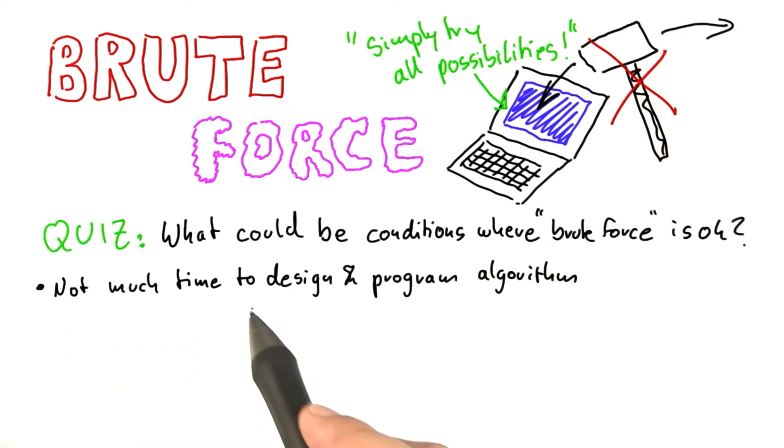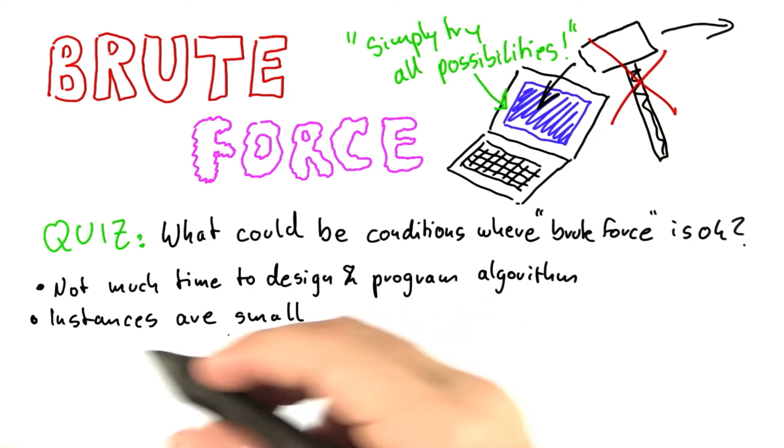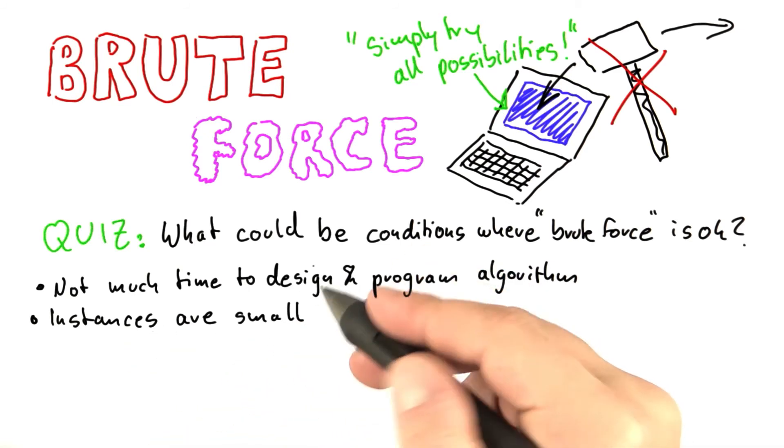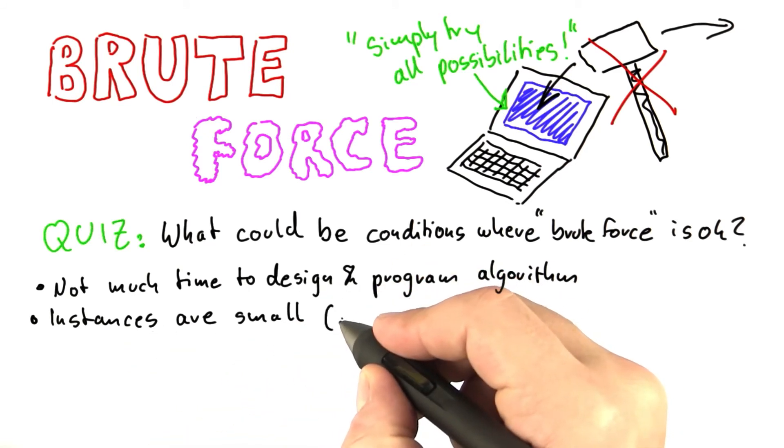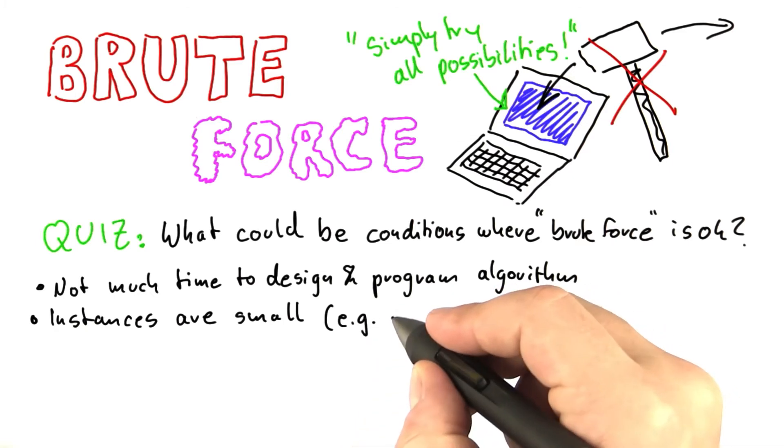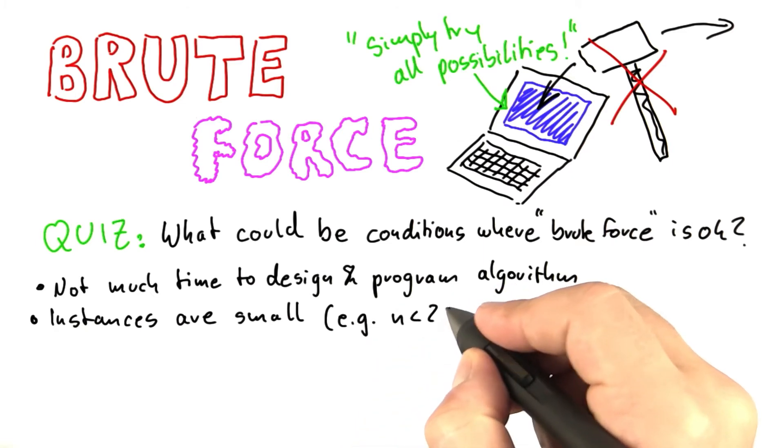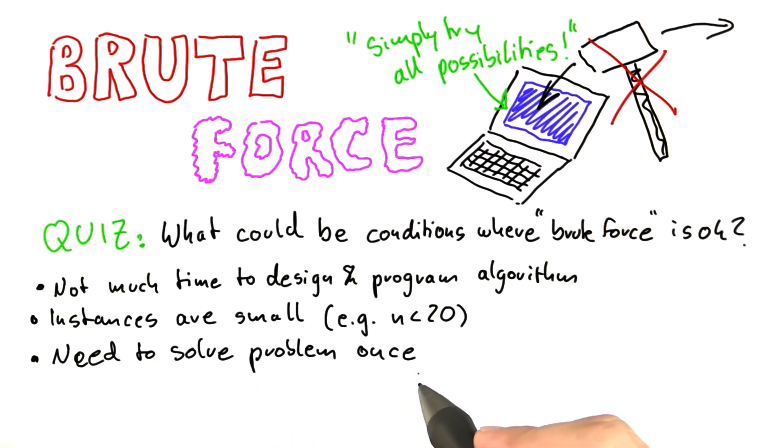Could it be that when you don't have much time to design and program a more sophisticated algorithm? Could it be when the instances or the inputs for which you're trying to solve your problem are small? So say n, the size of the problem is smaller than 20. Or could it be when you need to solve the problem only once and the input might be a little bit bigger there.